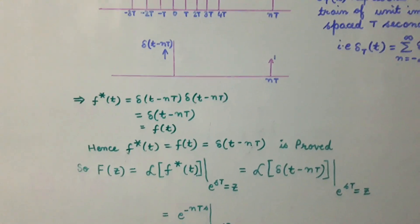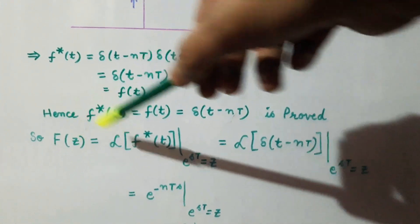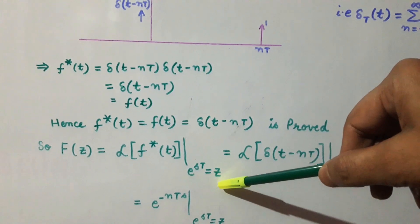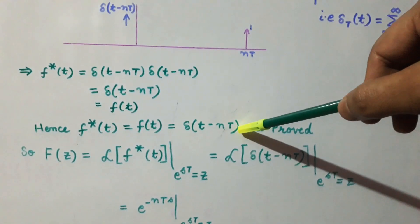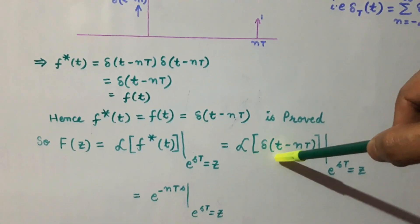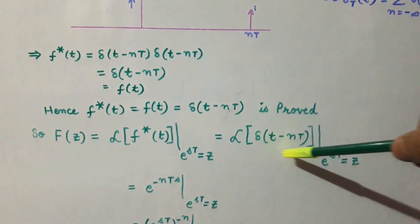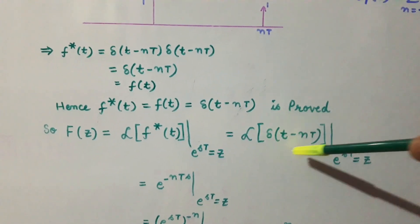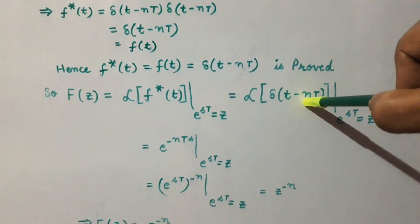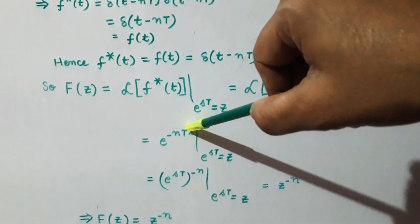Now we will find the Z transform of this shifted unit impulse. The Z transform of f(t) can be written as the Laplace transform of f*(t) when e^(sT) = z. The value of f*(t) is delta(t - nT), so we substitute this to get the Laplace transform of delta(t - nT) evaluated when e^(sT) = z. From the chapter on Laplace transform, the Laplace transform of this shifted unit impulse comes out to be e^(-nTs).